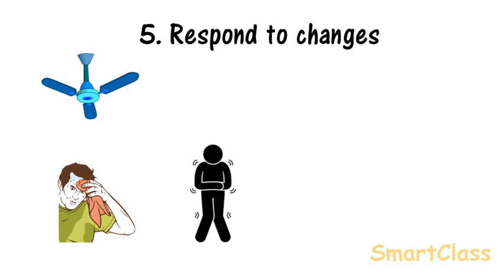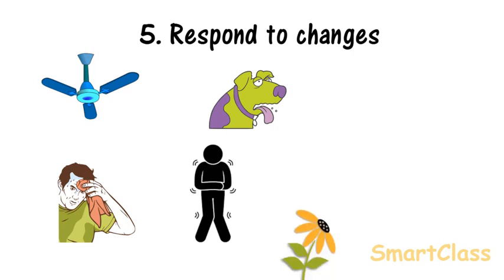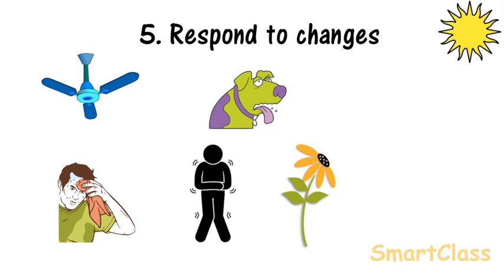When a dog feels hot, it pants to keep cool. The sense organs in animals enable them to respond to changes around them. Plants also respond to changes around them.